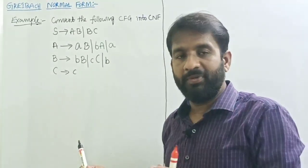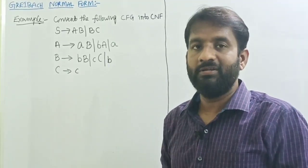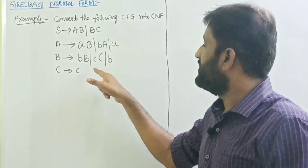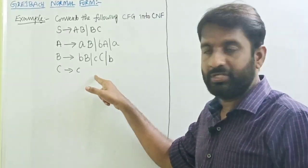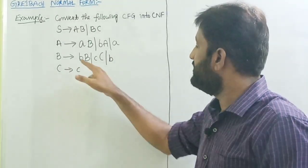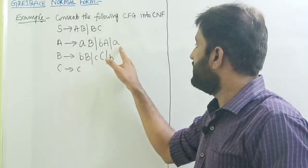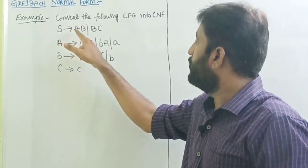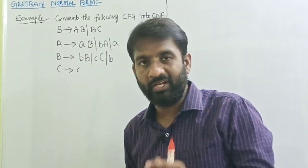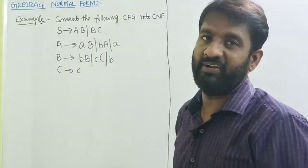The first step in the procedure is to simplify the grammar. By observing this, there are no unit productions and no epsilon productions. C derives C, B derives B, A derives A — so A, B, C are all reachable. Therefore the given grammar is already in simplified form.